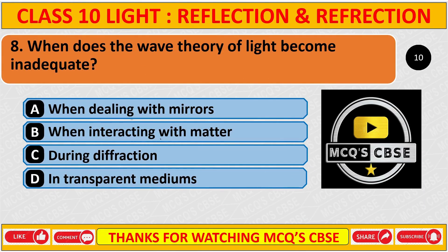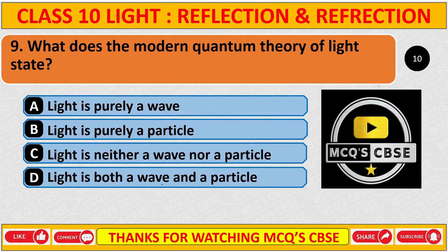When does the wave theory of light become inadequate? The correct answer is B: when interacting with matter. The correct answer is C: light is both a wave and a particle.